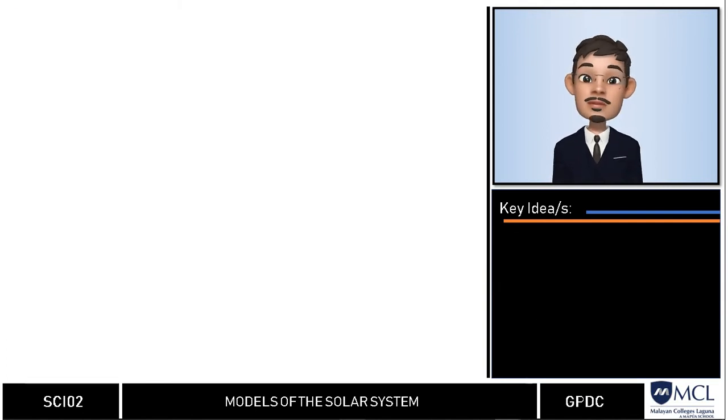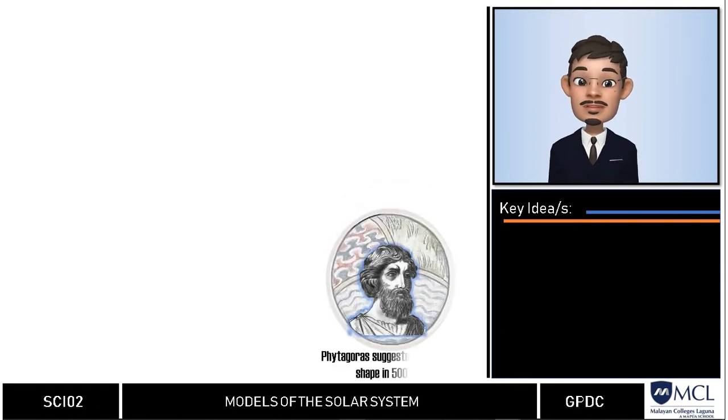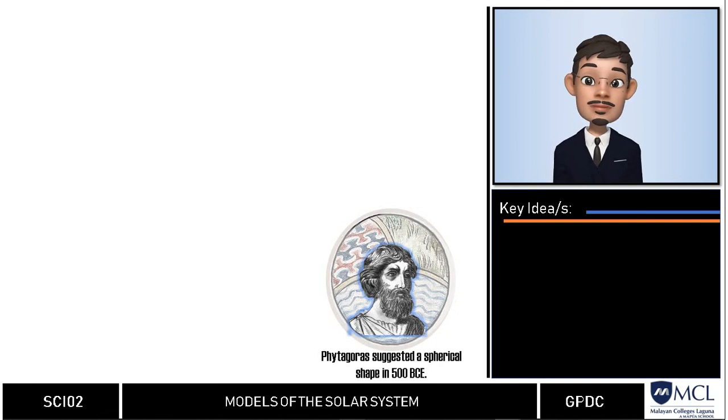The rise of geocentric theory started when the Greek mathematician Pythagoras suggested that the earth is spherical in shape in about 500 BCE. This was accepted by most Asian Greek philosophers at that time.